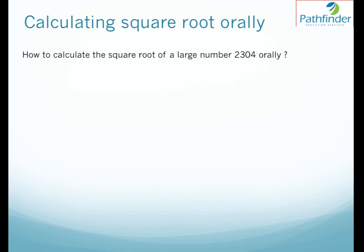So if you have a number like 2304, it's a perfect square and you want to calculate the square root of this number 2304 orally. Let us see how to calculate the square root. The first thing is from the rightmost digit count two digits 4 and 0 in this case and place an imaginary vertical line in the way shown.